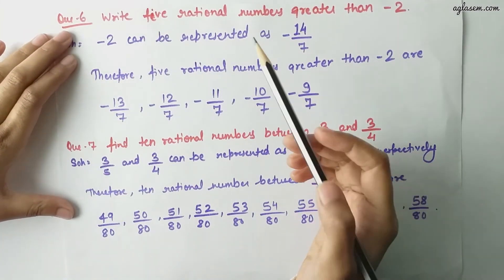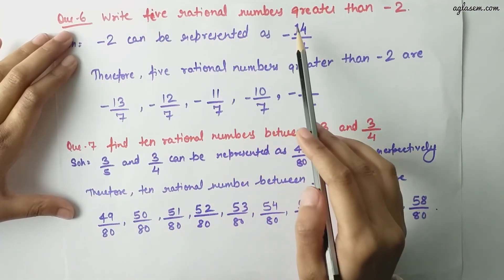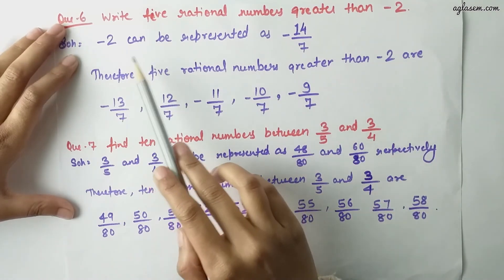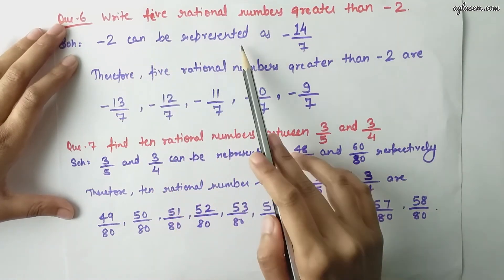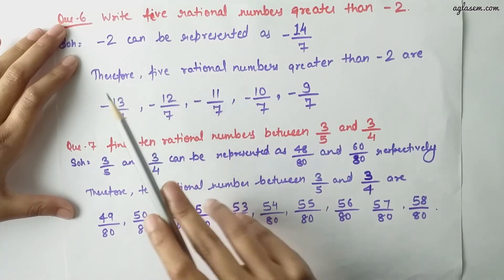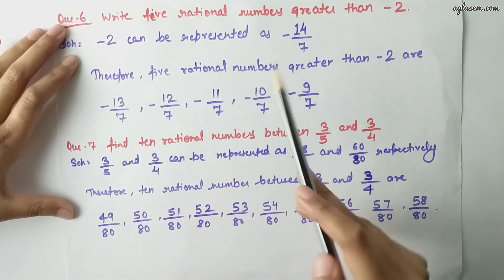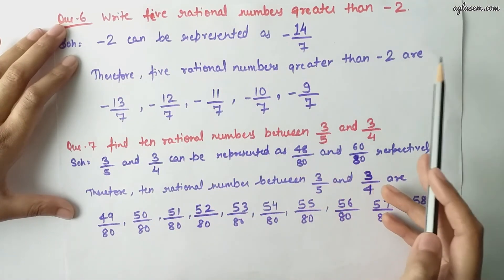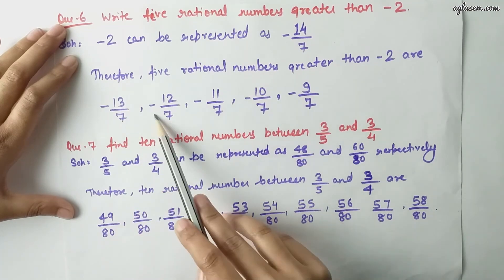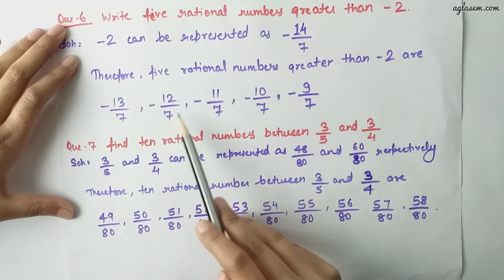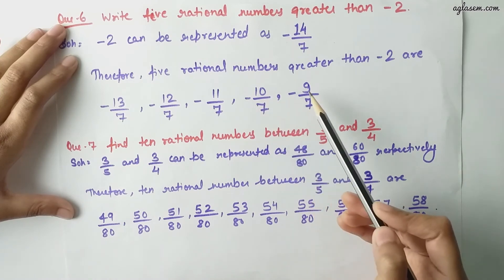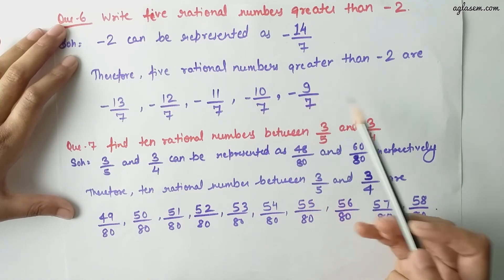Moving to the sixth question: write 5 rational numbers greater than minus 2. Minus 2 can be represented as minus 14 by 7. Therefore, 5 rational numbers greater than minus 2 are minus 13 by 7, minus 12 by 7, minus 11 by 7, minus 10 by 7, and minus 9 by 7.